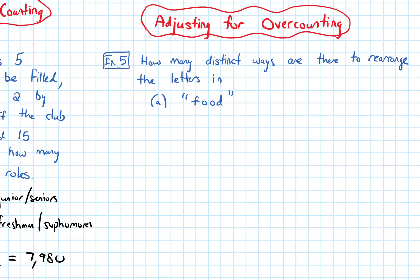In this video, we are going to talk about adjusting for overcounting. I want to talk about this with an example: how many distinct ways are there to rearrange the letters in a word? In part A, the word is 'food'.